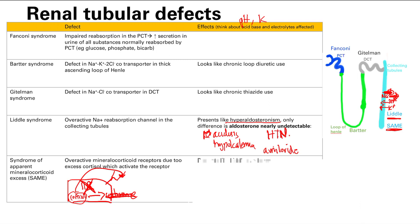You can treat SAME syndrome two ways: with potassium-sparing diuretics that block the mineralocorticoid receptor, or with corticosteroids. Why give steroids? Because of the feedback loop — if you give exogenous steroids, they'll go to the brain and shut off endogenous cortisol production. So you decrease endogenous steroid production. The presentation is the same as Liddle syndrome, but treatment options differ.